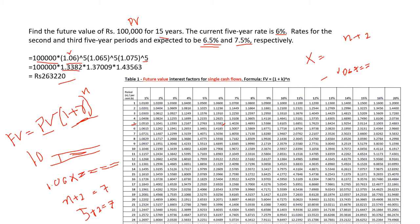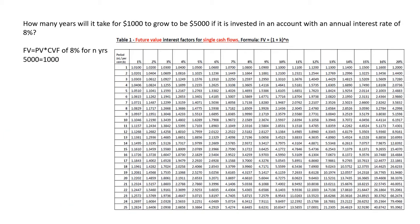So now let's move to the next question. In this question, how many years will it take for $1,000 to grow to $5,000 if it is invested in an account with an annual interest rate of 8%? That means we are given the rate, the present value, and the future value. But we don't have N here. We need to find N.